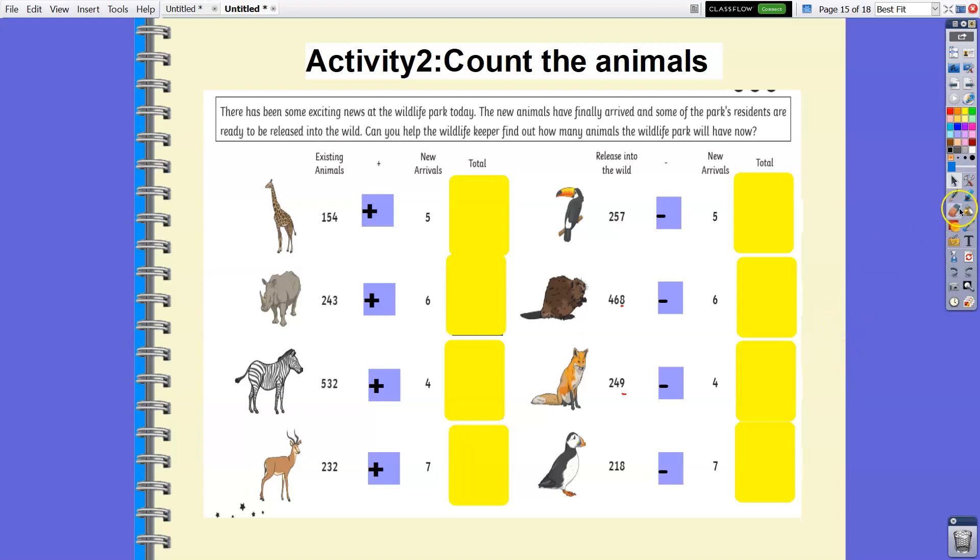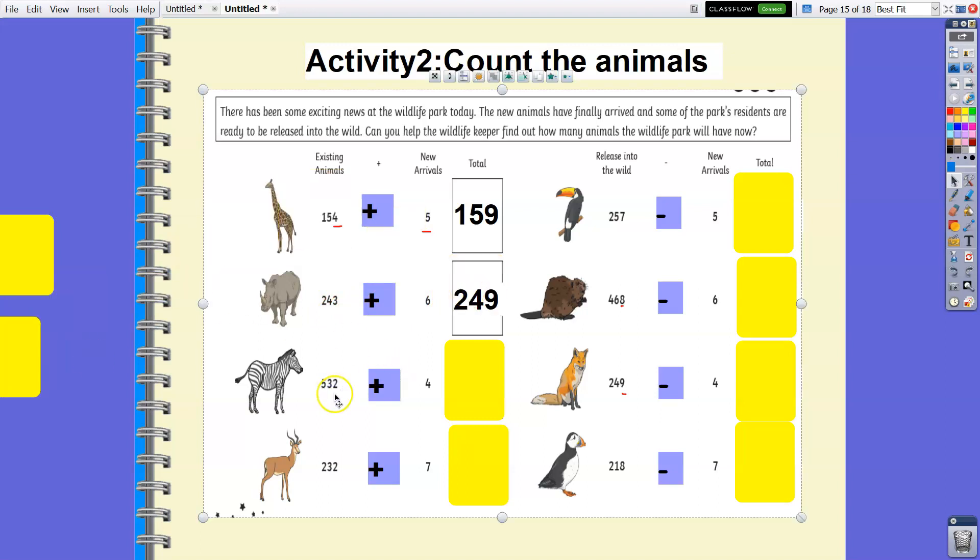Time is up. Again, look at the ones digit for addition. 154 plus 5: 4 plus 5 is 9, so therefore 159. 243 plus 6: 3 plus 6 is 9, so 249. 532 plus 4: 2 plus 4 is 6, therefore it's 536.